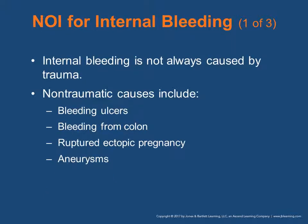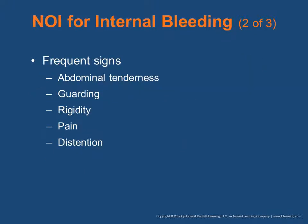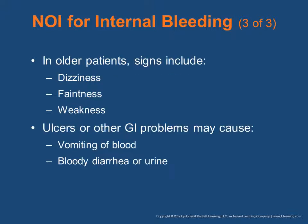Internal bleeding is not always caused by trauma. Causes include bleeding ulcers, bleeding from the colon such as a polyp, a ruptured ectopic pregnancy, and aneurysms. Frequent signs are abdominal tenderness, guarding — where they're holding their abdomen and not taking deep breaths because of pain — rigidity, where blood within the abdomen causes a board-like rigidity, and pain and distension. An active bleed within the gut can lead to distension. In older patients, signs may include dizziness, faintness, weakness, ulcers, or GI problems. Patients may have vomiting of blood, and bloody diarrhea or blood in the urine are very indicative with a very unique smell.